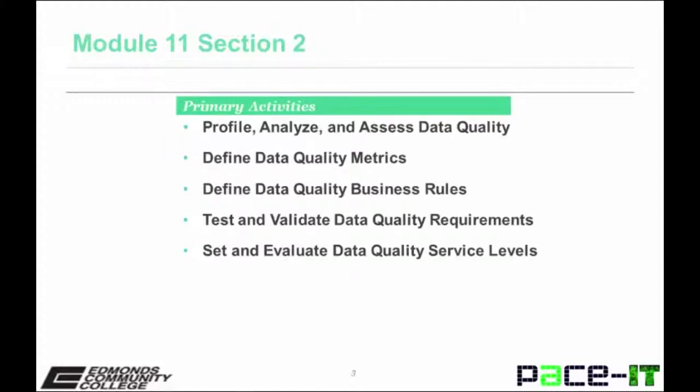Primary activities as listed in the DAMA DMBOK include the following: Profile, Analyze, and Assess Data Quality; Define Data Quality Metrics; Define Data Quality Business Rules; Test and Validate Data Quality Requirements; and Set and Evaluate Data Quality Service Level.